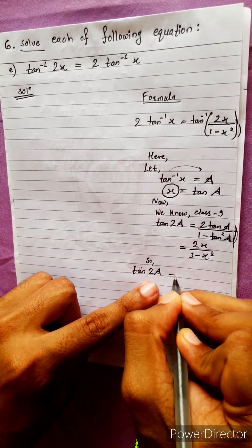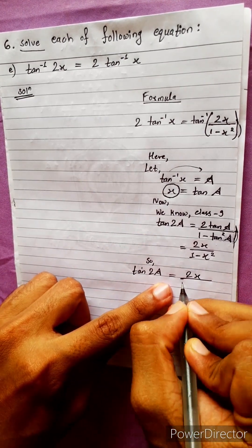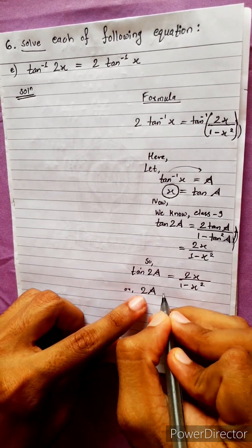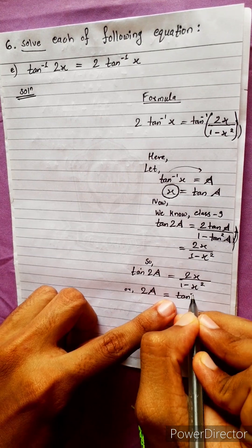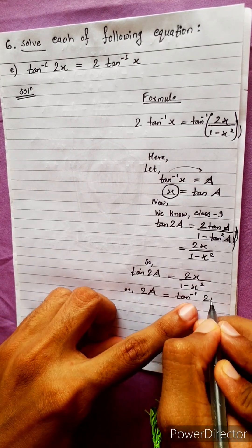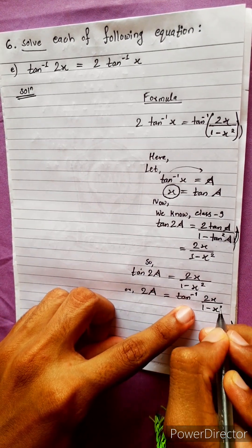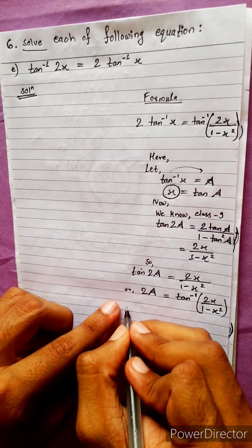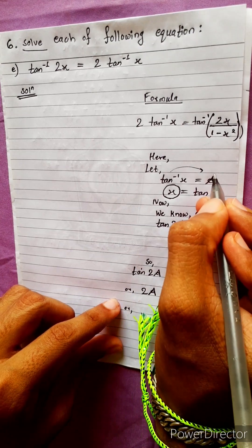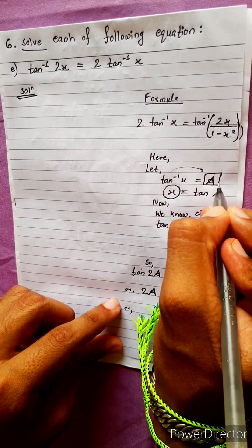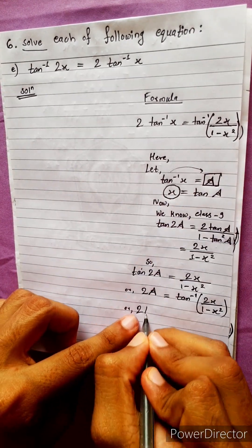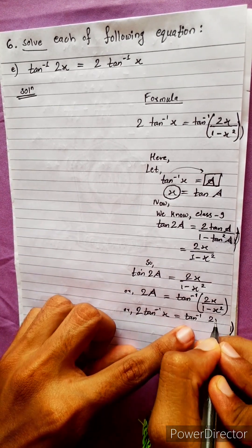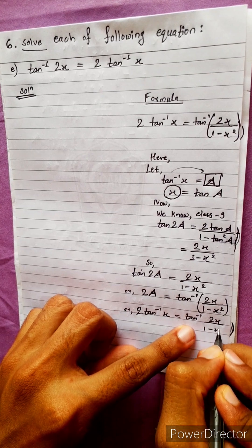tan(2a) is equal to 2x by 1 minus x squared. 2a is equal to tan inverse 2x by 1 minus x squared. tan inverse x equals to tan inverse 2x by 1 minus x squared.